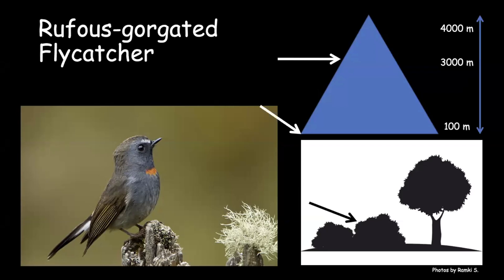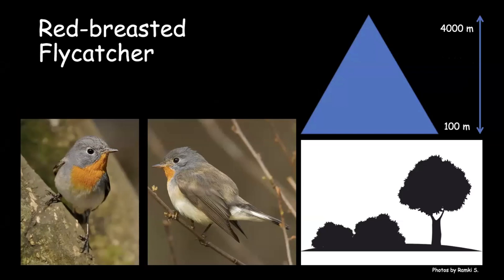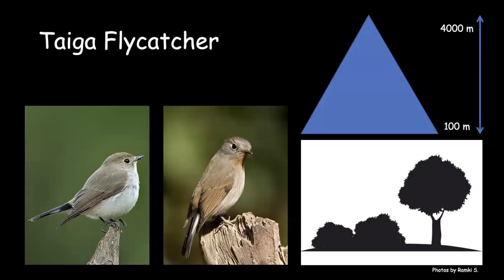The red-breasted flycatcher and red-throated flycatcher were once considered one species. One of the best ways to tell them apart is to look at the upper tail coverts — in red-breasted flycatcher this area is always pale, along with a pale base of the bill. If you see these two characteristics there is no need to worry about identification. Found in bushes or the lower part of trees.